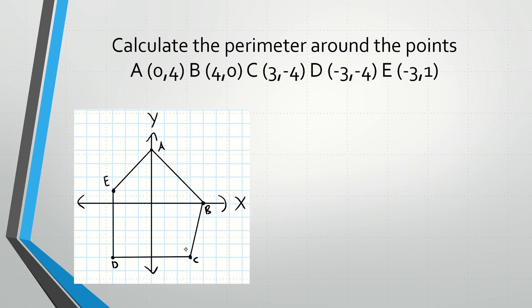Let's start with the distance DC — I'll write it with a line above it because it's a segment. The distance DC is 6. And the distance ED is 5.